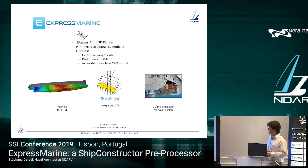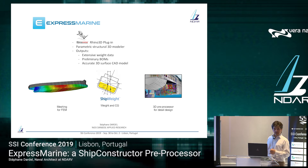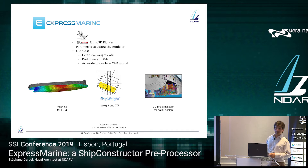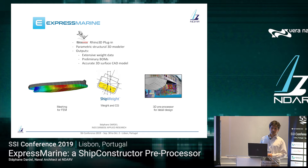Express Marine is a Rhinoceros plugin. We like Rhino. We also have Orca 3D, which is another plugin that does hull design and preliminary stability. Inside the friendly Rhino environment, we do a parametric structural 3D model. Parametric means that it's flexible — you can modify it and update it, because it lives on parameters. The hull form is one parameter, the frame spacing is another, and so on. That can evolve throughout your design process.